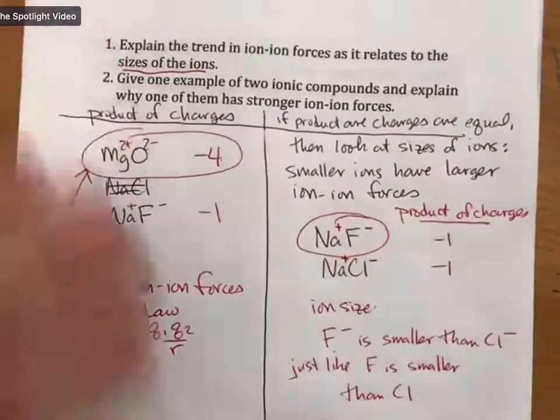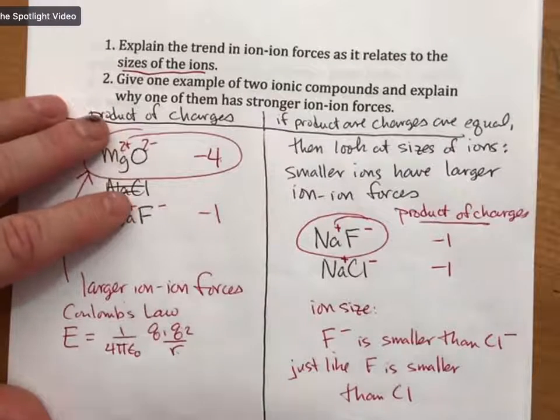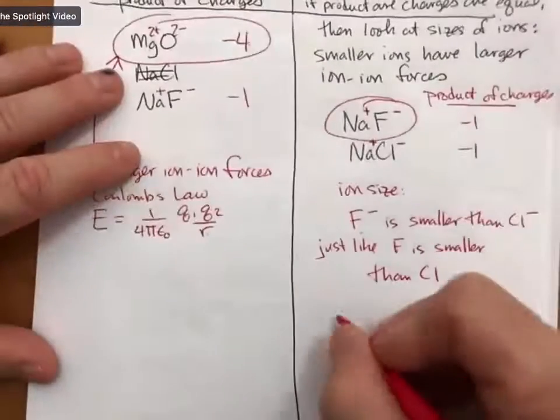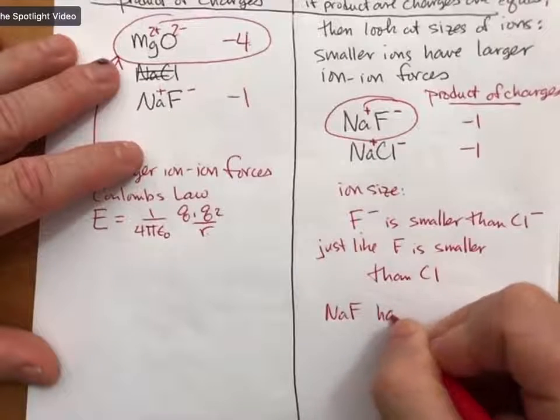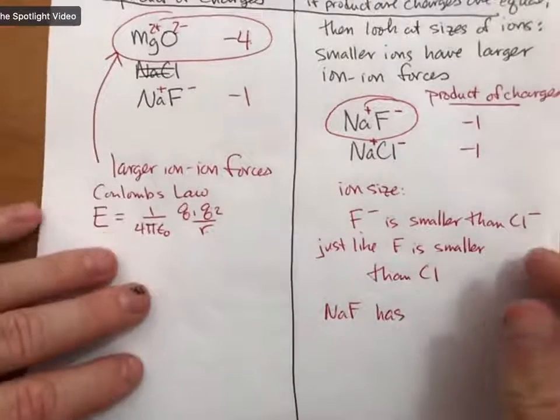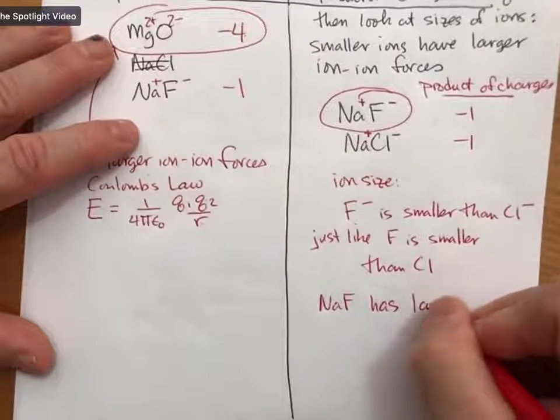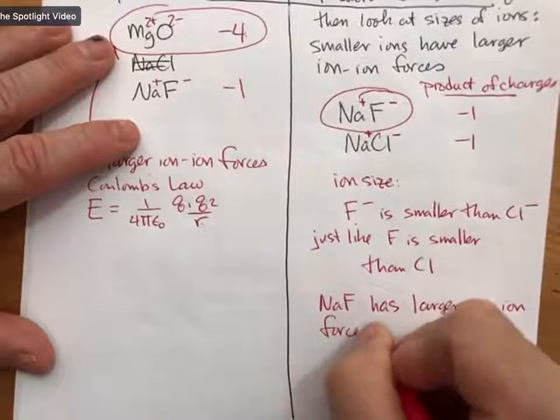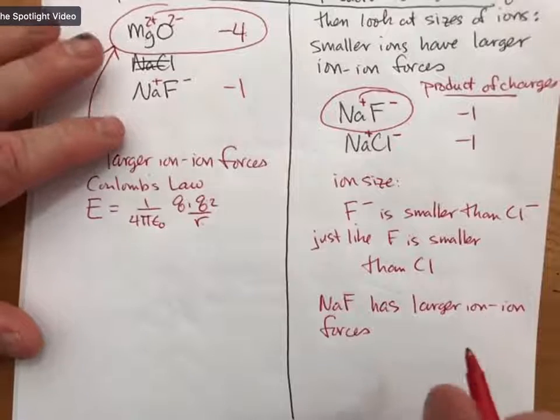And sodium fluoride, because it's smaller, has the larger ion-ion forces. So sodium fluoride has larger ion-ion forces, because fluoride, F minus, is smaller than chloride.